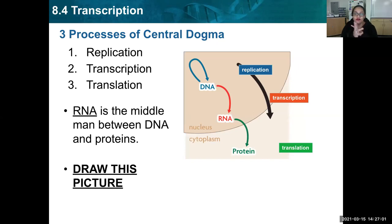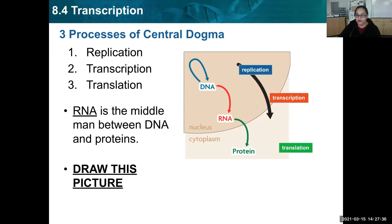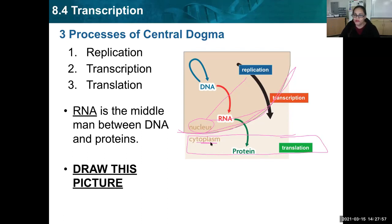The central dogma of biology states that information flows in one direction: from DNA to RNA to proteins. There are three processes in the central dogma. The first one we went over last week. The second one is transcription — that's what we're going over today. The third one is translation for next week. RNA is the middleman between DNA and proteins. DNA has a lot of information that needs to get out, but it's too large to leave the nucleus, so it sends a messenger out into the cytoplasm to build proteins. I want you to draw this picture, and make sure you include the line between the nucleus and the cytoplasm — replication and transcription happen in the nucleus, while translation, the making of proteins, happens in the cytoplasm.